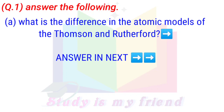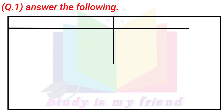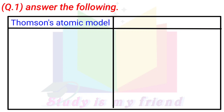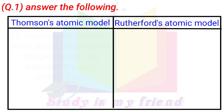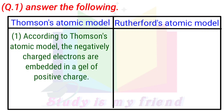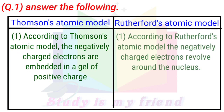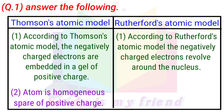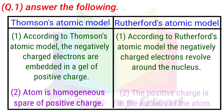Question 1A: What is the difference in the atomic models of Thomson's and Rutherford's? Thomson's Atomic Model: The negatively charged electrons are embedded in a gel of positive charge, and the atom is a homogeneous sphere of positive charge. Rutherford's Atomic Model: The negatively charged electrons revolve around the nucleus, and the positive charge is concentrated in the nucleus of the atom.